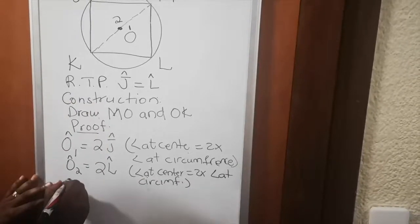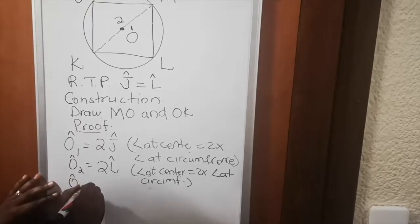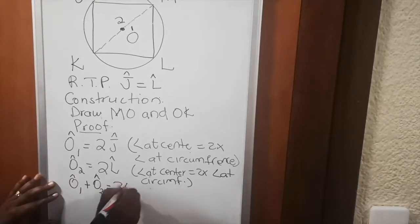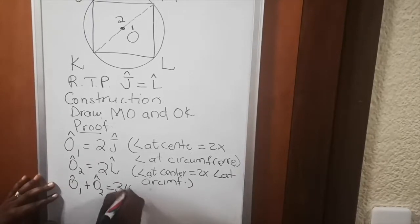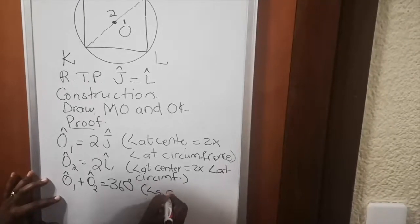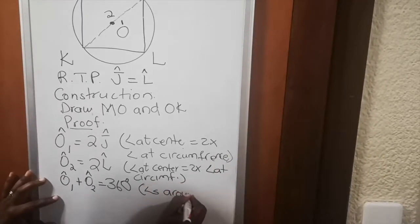Then you have angle O1 plus angle O2 is equal to 360 degrees. And the reason is angles around a point.